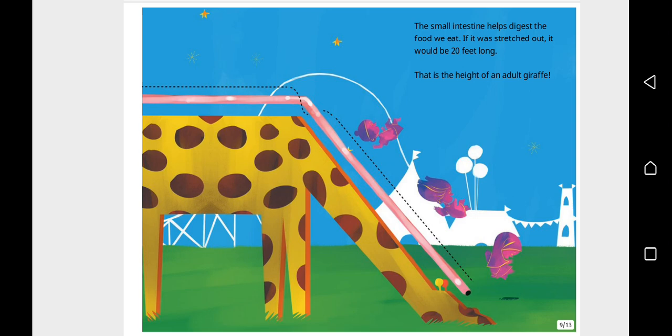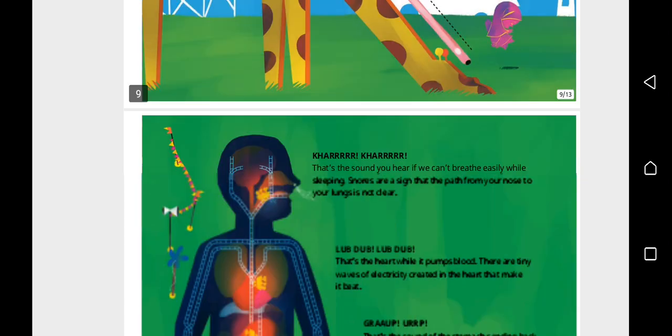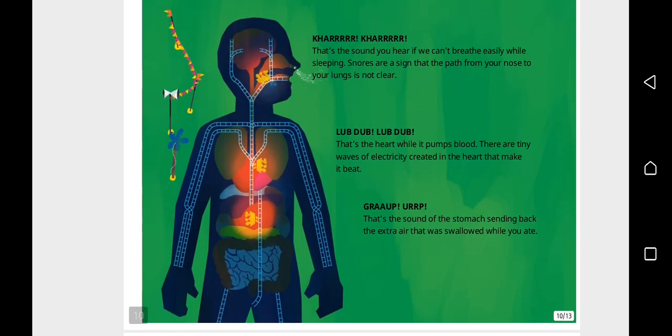That's the sound you hear if we can't breathe easily while sleeping. Snores are a sign that the path from your nose to your lungs is not clear. Lub lub lub lub—that's the heart.